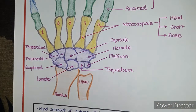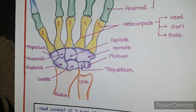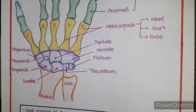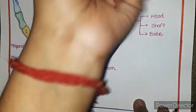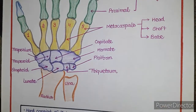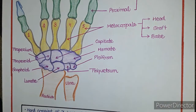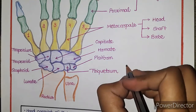Starting from the carpals — we have eight carpal bones. Carpal bones are those bones which form our wrist joint. Our eight carpal bones are divided into two rows: the proximal row and the distal row.